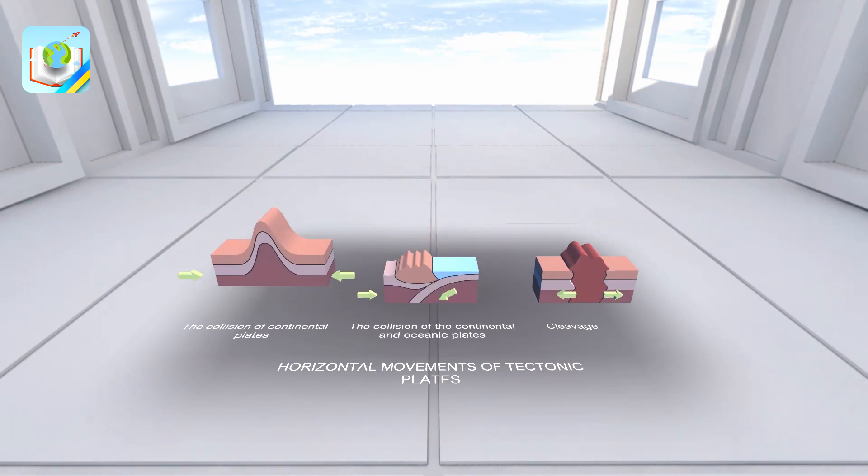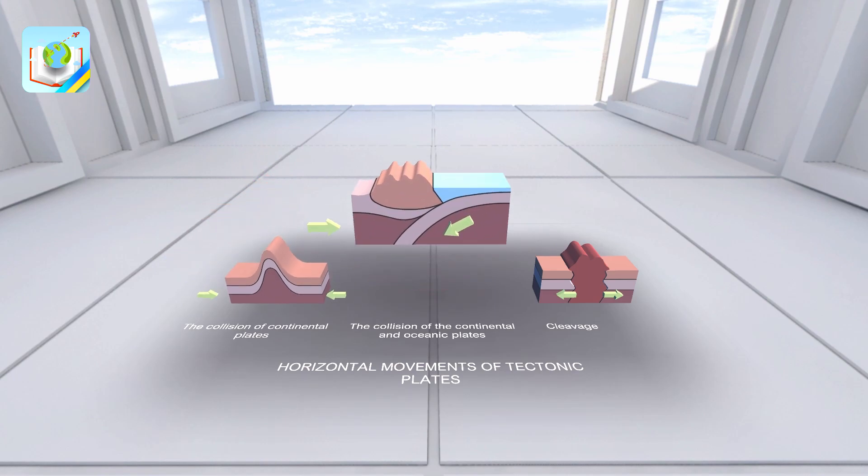There are three types of horizontal movements: the collision of continental plates, the collision of continental and oceanic plates, and cleavage.